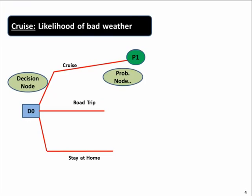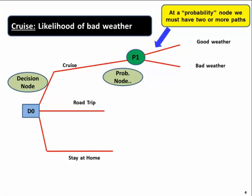In the case of a cruise, let's say there's a likelihood of bad weather. The word likelihood is causing probabilities to exist. So we have a probability node which we represent in circles. Here we say probability and we define it as P1 and the likelihood of good weather or bad weather.